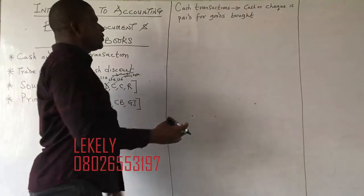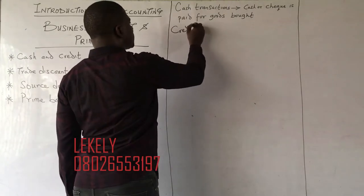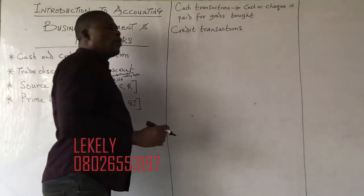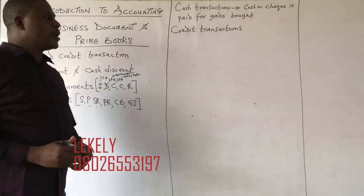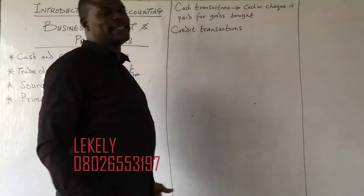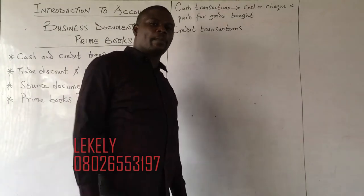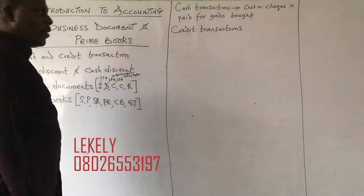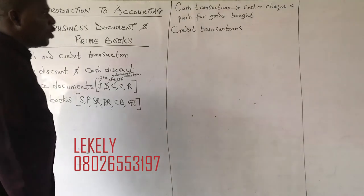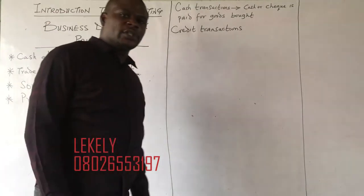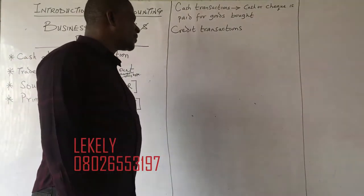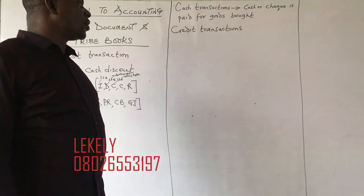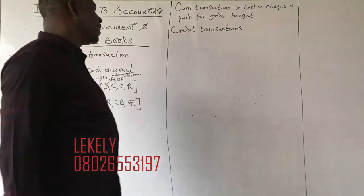Credit transactions are transactions where goods are bought but paid for at a later date. The money is not paid immediately — that is what we call a credit transaction. When you buy now and payment is not made immediately, or when you sell and money is not received immediately, cash is not paid or received right away.